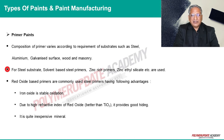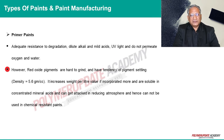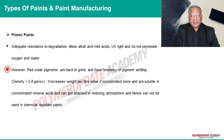For steel substrates, solvent-based steel primers such as zinc-rich primer and zinc ethyl silicate are used. Red oxide-based primers are commonly used steel primers. Red oxide is a stable oxide; due to its high refractive index — better than titanium dioxide — it provides good hiding and is inexpensive. It provides adequate resistance to degradation, dilute alkali, and mild acids, and is resistant to UV light. However, red oxide pigments are hard to grind, have a tendency to settle due to high density (5.6), and are soluble in concentrated mineral acids. They cannot be used in chemical-resistant paints.